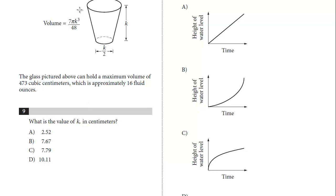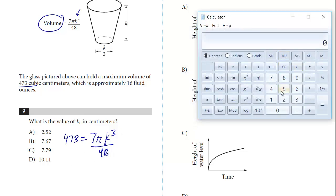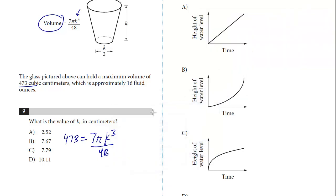We're given k, and we're given the volume in the reference information: 473. So we're just going to plug in 473, which equals 7 times pi times k cubed over 48. The first step is to get rid of the 48 — we multiply both sides by 48. So 473 times 48 gives us 22,704. So 22,704 equals 7π k cubed.